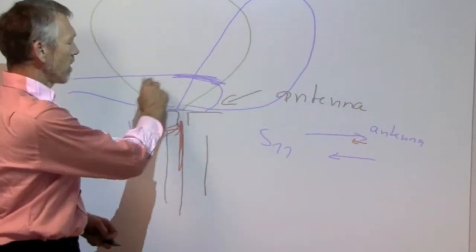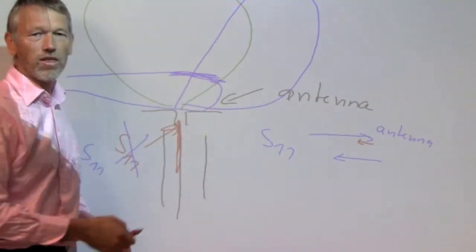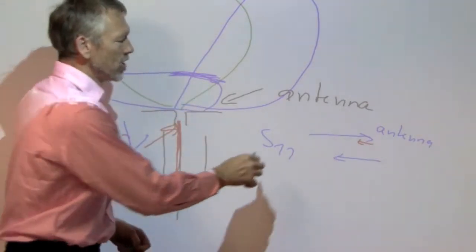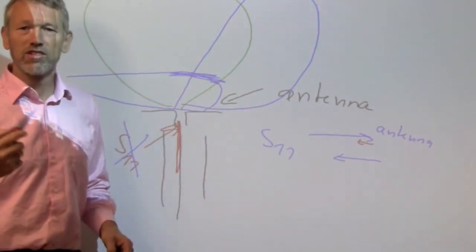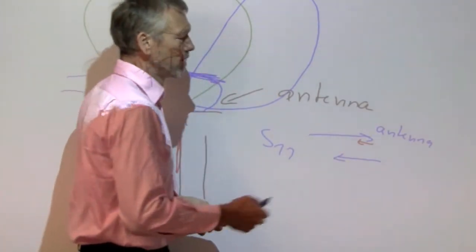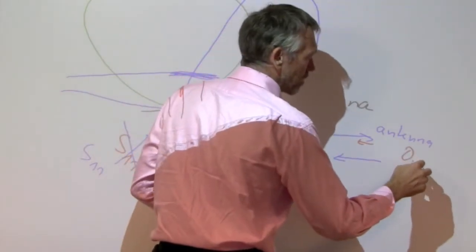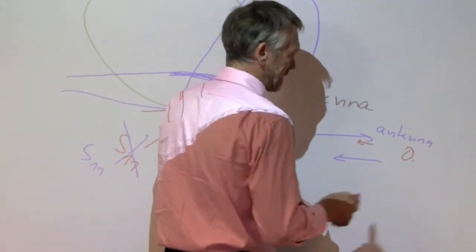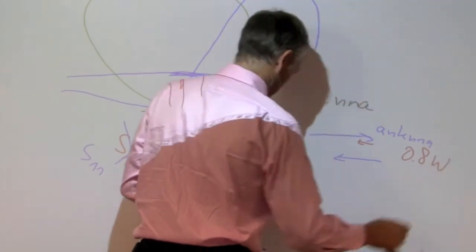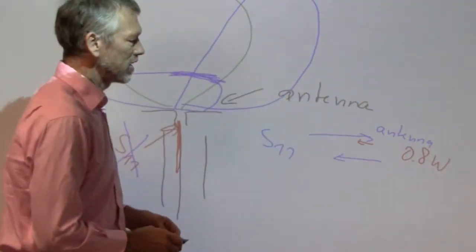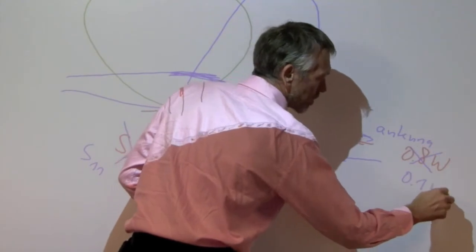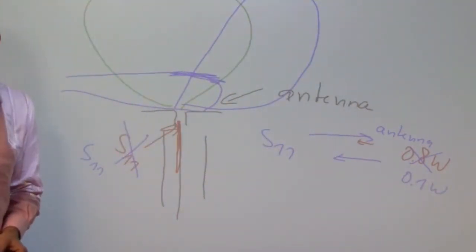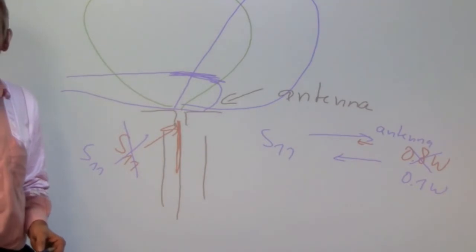If you put another tissue on top of it, whether that's a thumb or anything else, you will change this and a lot more energy will come out. So instead of radiating, let me say 0.8 watts, you will suddenly only radiate like 0.1 watt, because the rest of the energy is simply going back.